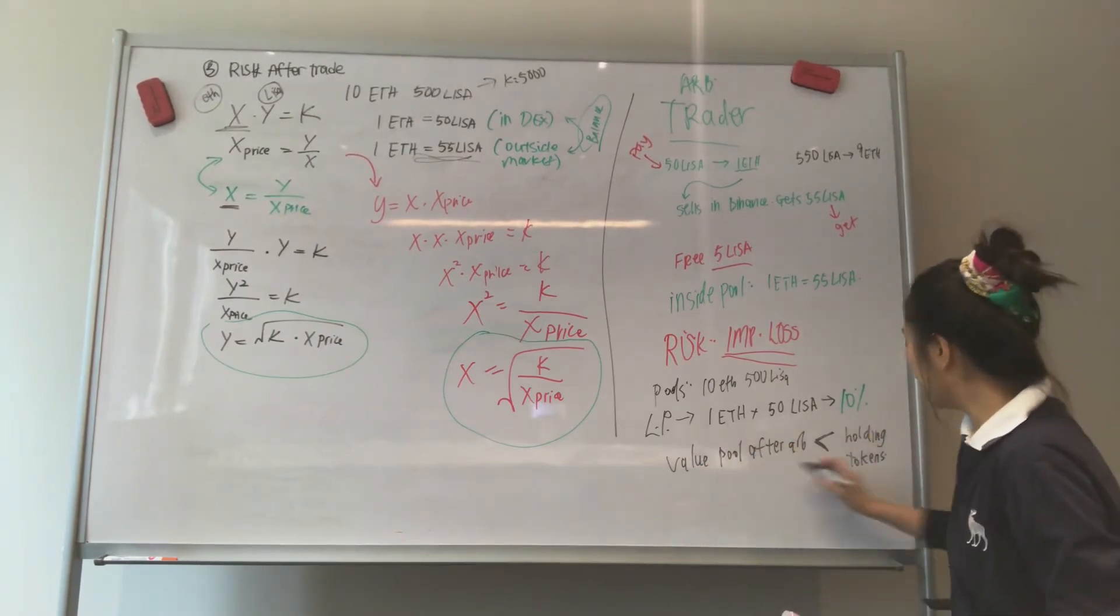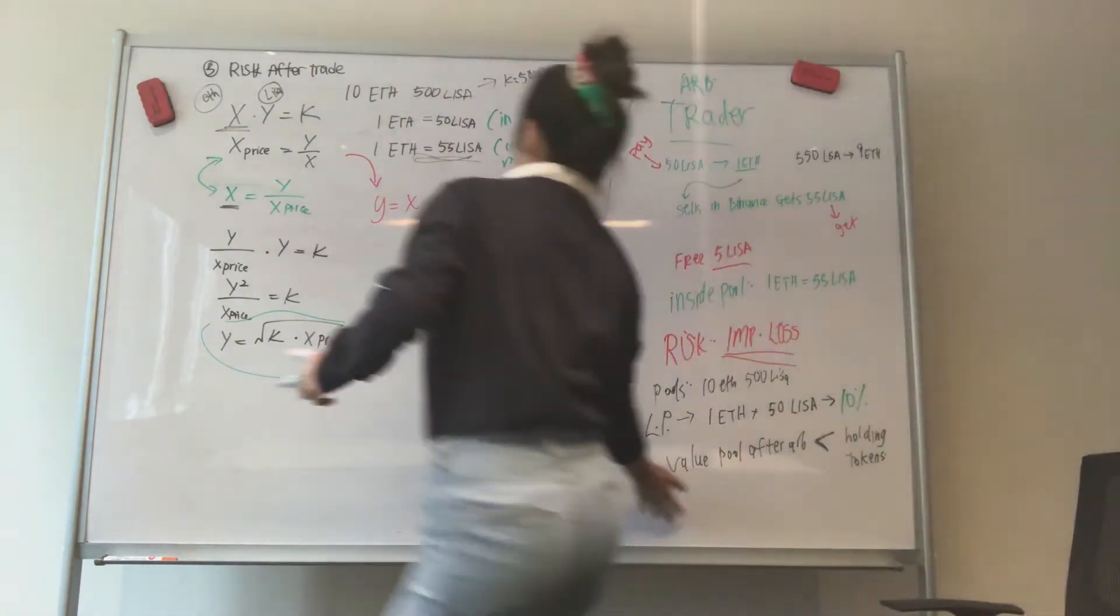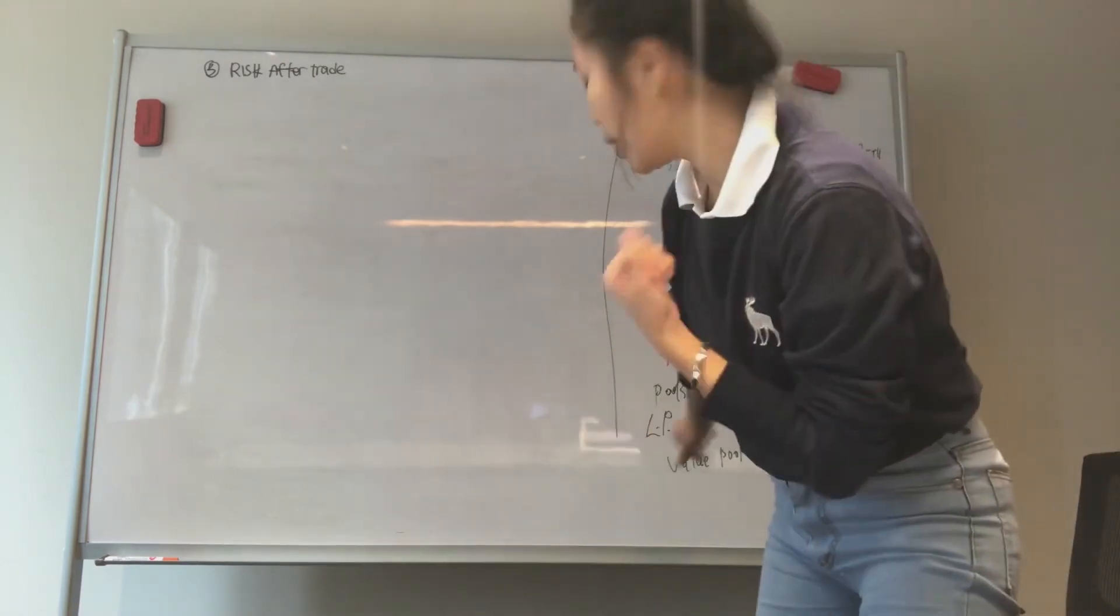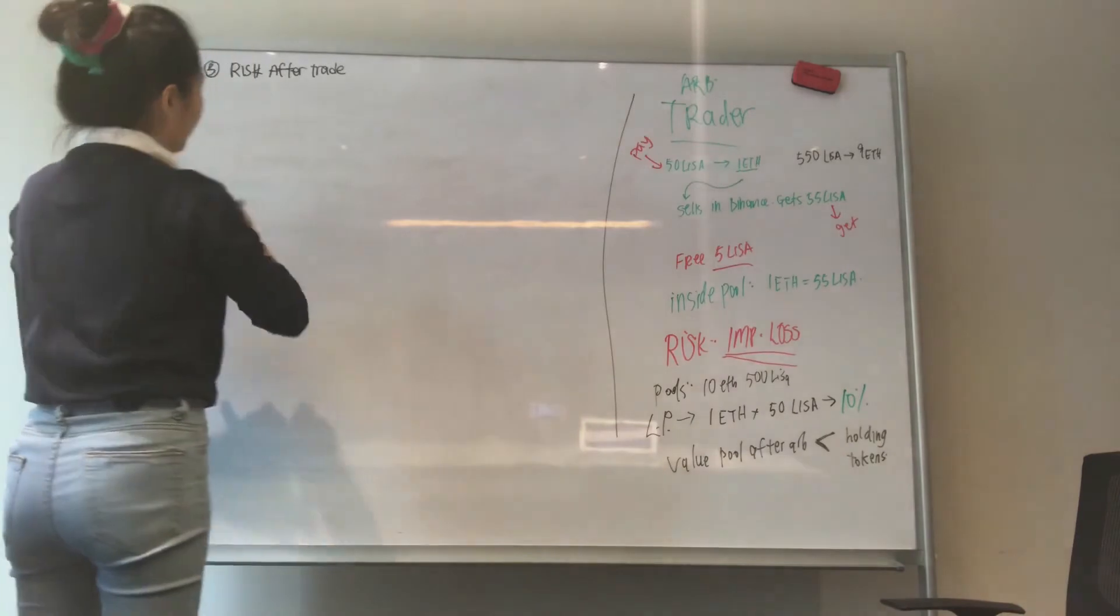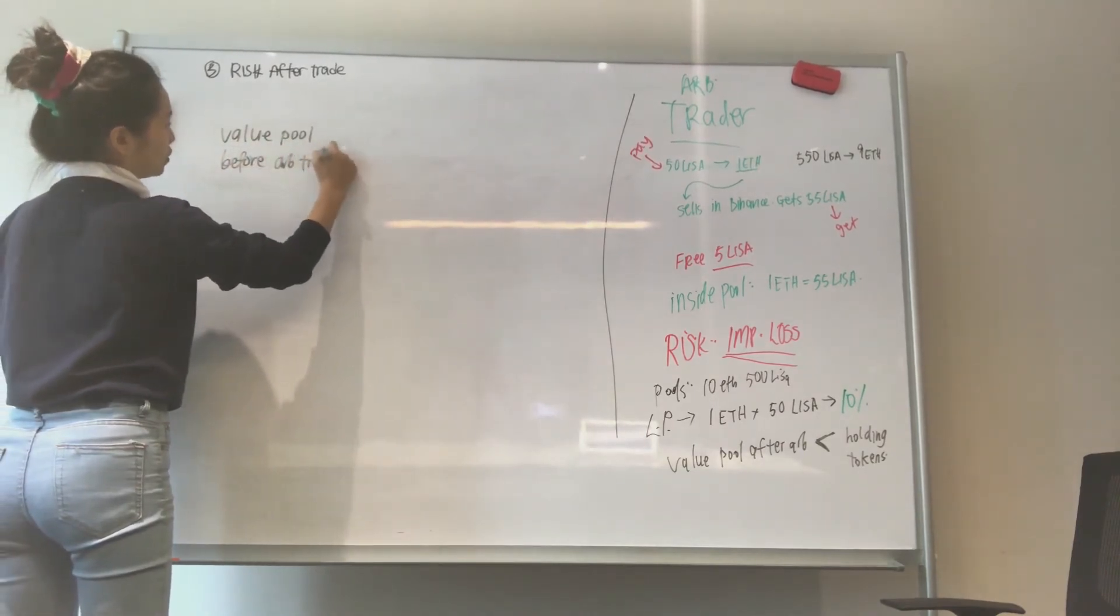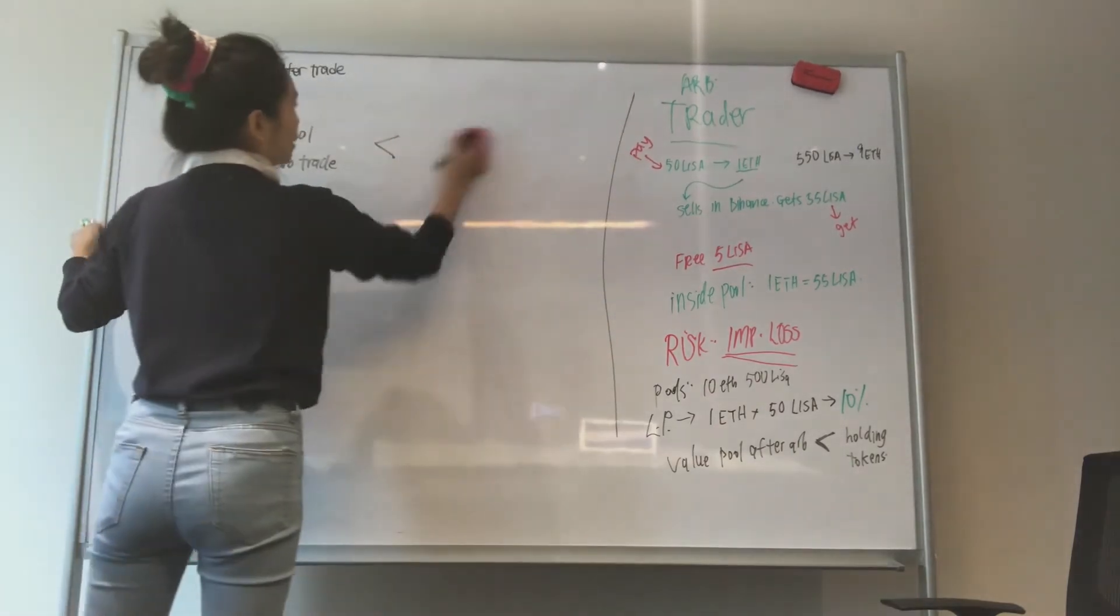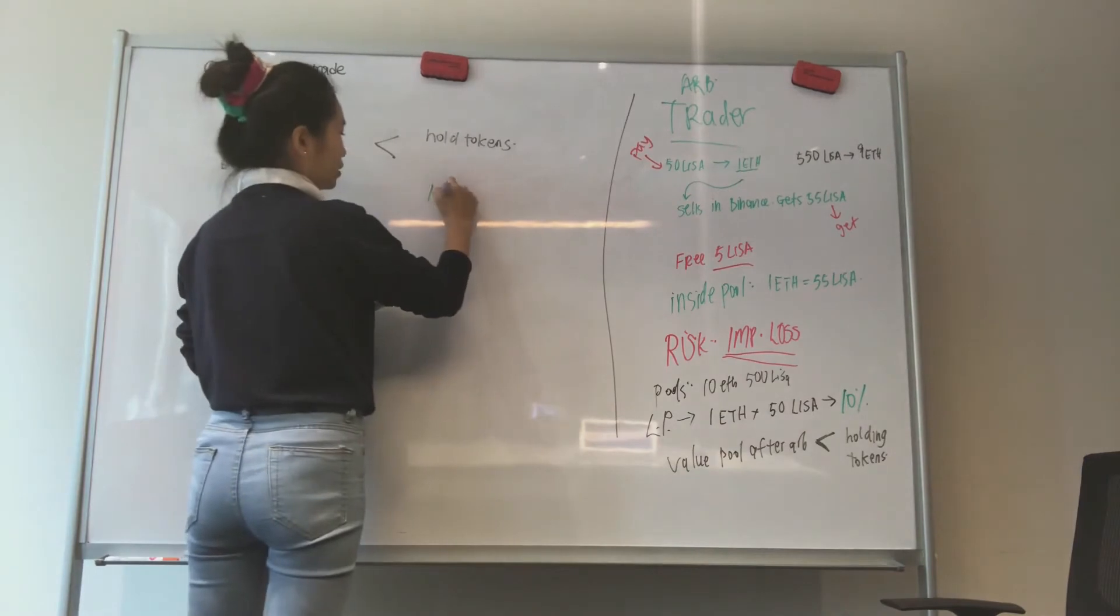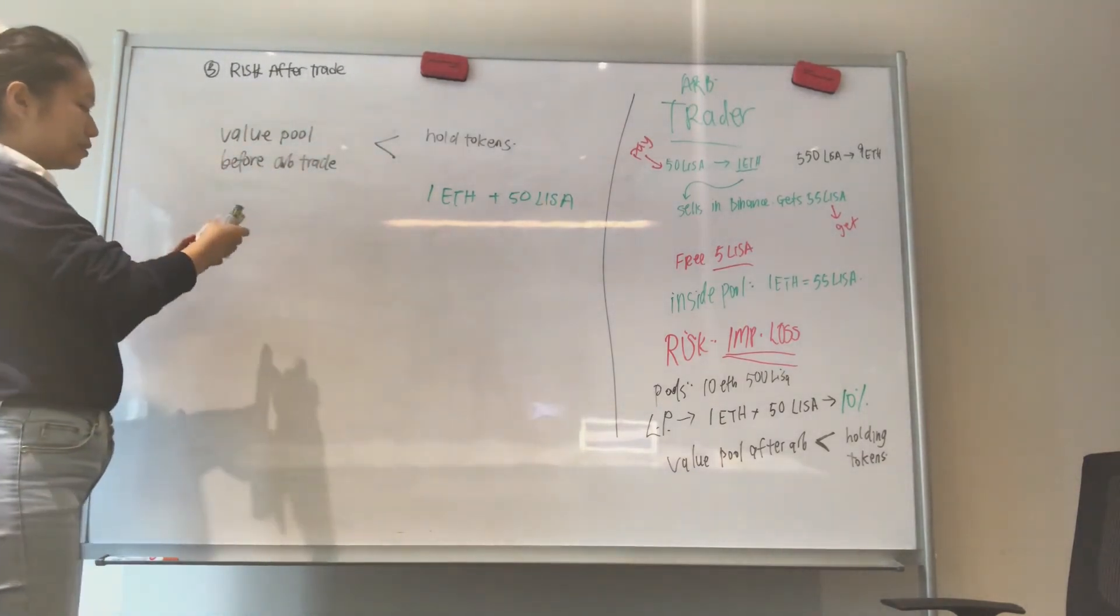So what do I mean? We had 1 ETH plus 50 LISA tokens. So what we want to show right now is this situation of, what do I mean by impermanent loss? Where is the loss coming from and how do we calculate that? We have the value of pool after arbitrage trade is less than just holding tokens. So we started off with 1 ETH plus 50 LISA tokens. And after, the value of the pool after that is less than that.